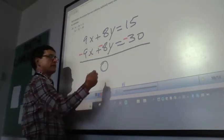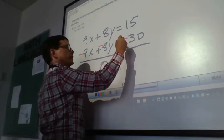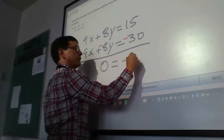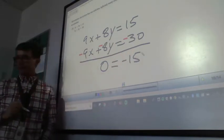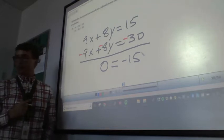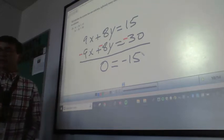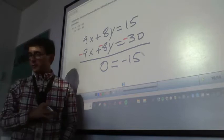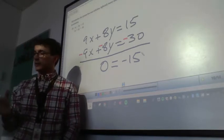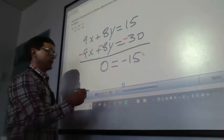So we get zero on the left and 15 minus 30 is negative 15. Okay, so when the two numbers don't equal, basically when all the variables cancel and the two numbers don't equal one another, that means no solution.